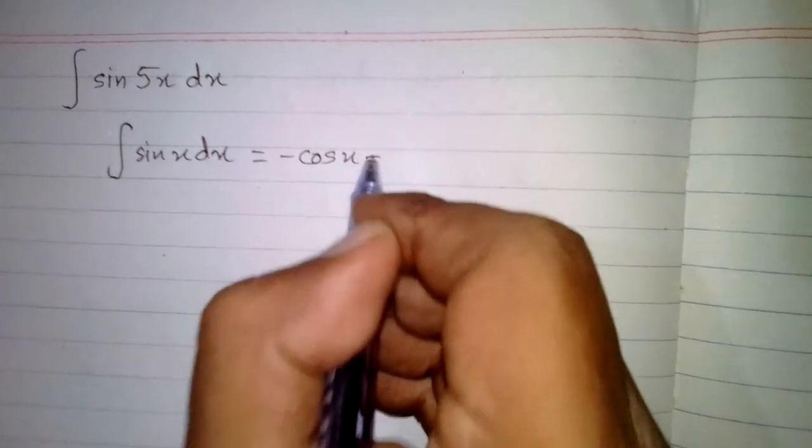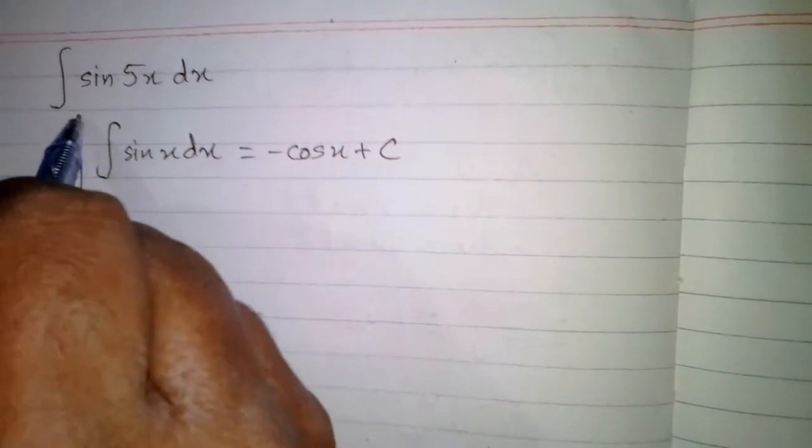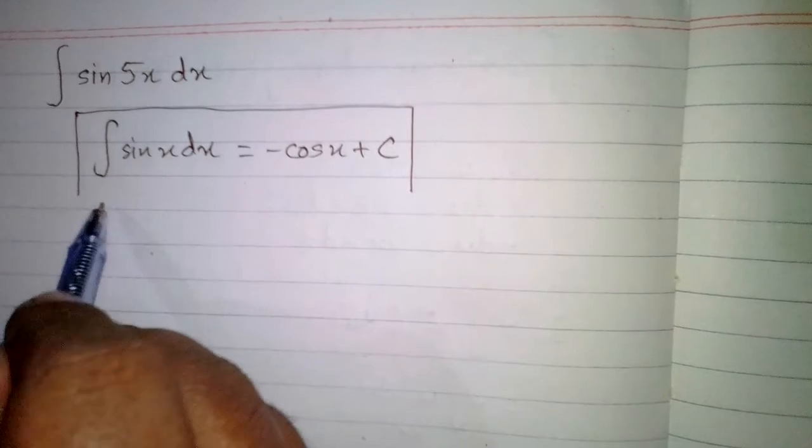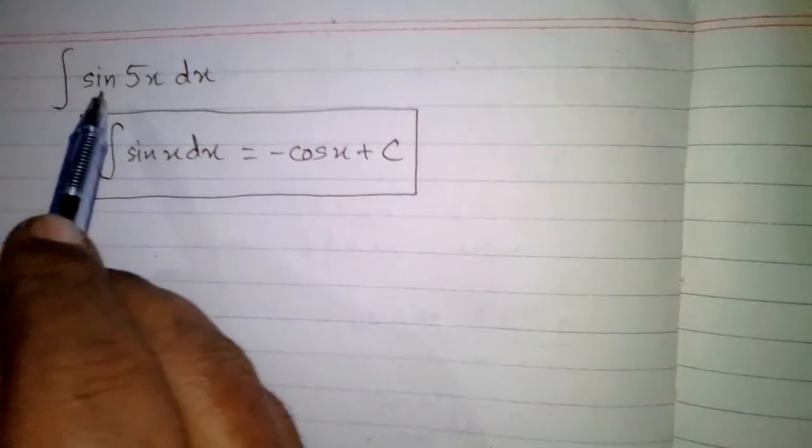In this video we are going to find out the integral of sin(5x). First of all, the formula for the integral of sin(x) with respect to x is minus cos(x) plus C, where C is the constant. We will use this formula in order to find out the integral of sin(5x).